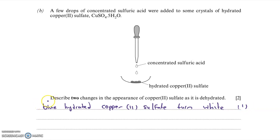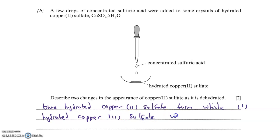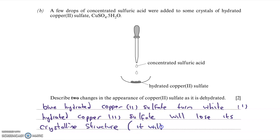It's actually a reversible reaction: if you add water to anhydrous copper sulphate (the white version), it turns blue again — and this is sometimes used as a test for water. To get the second mark, you need to note that hydrated copper 2 sulphate has a crystalline structure with blue crystals. When dehydrated, this crystalline structure is lost and the solid appears crumbly or powdery. So it's a two-mark question: one mark for the colour change and one mark for the loss of crystalline structure.